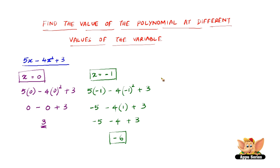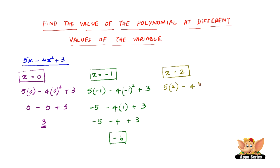Now let us find the value of 5x minus 4x squared plus 3 when x equals 2. Again, all we have to do is substitute 2 in the place of x, so therefore it becomes 5 into 2 minus 4 into 2 squared plus 3.